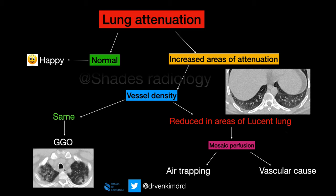Suppose the vessel density is reduced in the areas of lucent lung — if you see a lucent area of lung with reduced vessel density in comparison to the increased attenuated lung — then we call it mosaic perfusion. So don't confuse ground-glass opacity and mosaic perfusion. When you see a reduced number of vessels in the lucent lung, we call it mosaic perfusion.